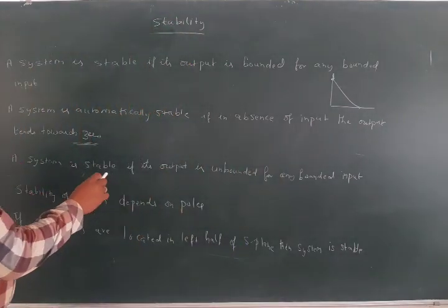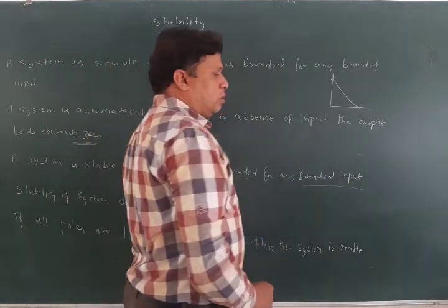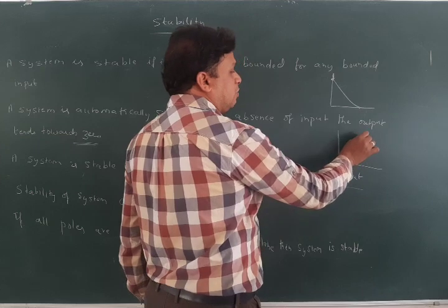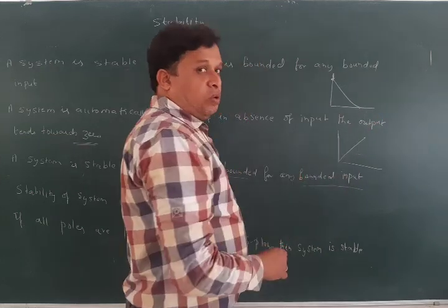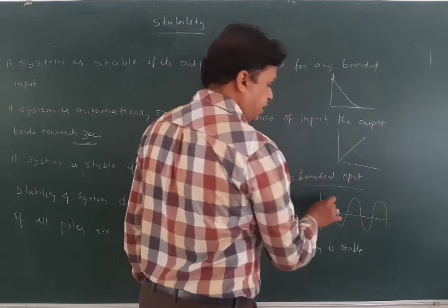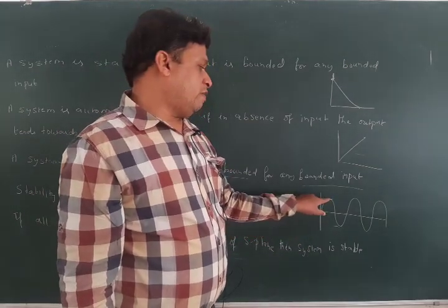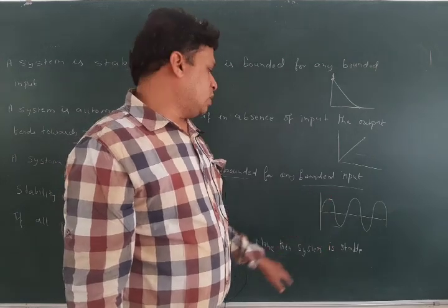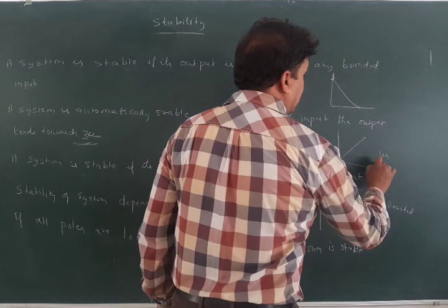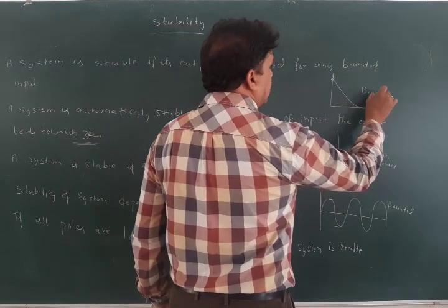A system is unstable if its output is unbounded for any bounded input. Unbounded means there is no specific limit — it can go up to infinity. If you draw a graph with fixed amplitude at plus 1 and minus 1, that is bounded output. The difference between bounded and unbounded is that unbounded has no limit, whereas bounded has a defined limit. These are the conditions for stability.